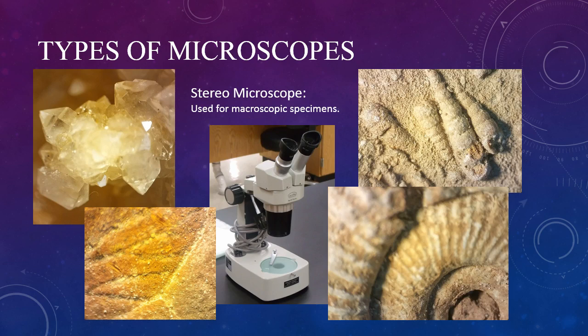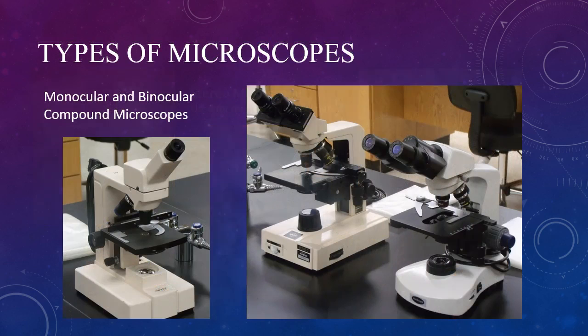This is a stereomicroscope. It is used for larger-scale specimens, perhaps an insect, or as is shown here, minerals or fossils. These are compound microscopes. They're called compound microscopes because they have multiple lenses.